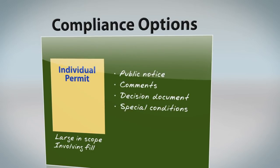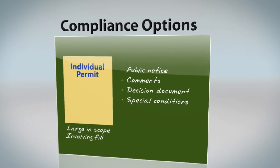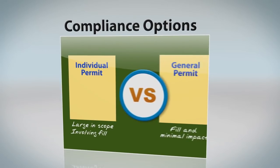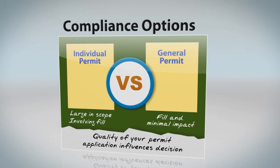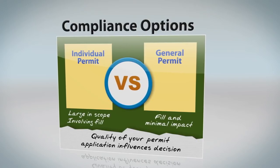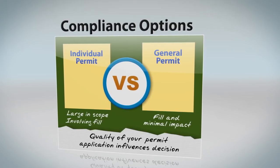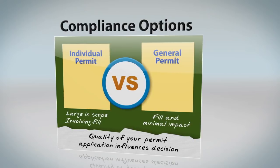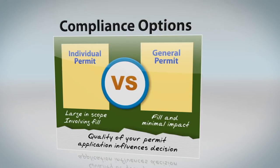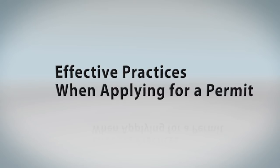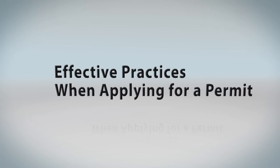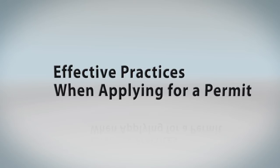All special and general conditions of the authorization must be followed. The quality of your permit application, along with your record of accomplishment for following through on environmental commitments, will be considered during the review of your project. Now let's look at some effective practices when applying for a permit, as well as some resources that will help construct a road through an environmentally sensitive area.